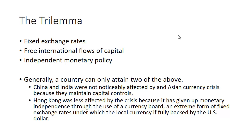For example, China and India were not greatly affected by the Asian currency crisis because they maintained capital controls — they controlled what money flowed in and out of the country. Hong Kong, on the other hand, has free international capital flows but maintains fixed exchange rates through a currency board, an extreme form of fixed exchange rate where the local currency is fully backed by the US dollar. To do this, Hong Kong gave up its independent monetary policy. This illustrates the core issues with fixed versus flexible exchange rates — there are advantages and disadvantages on both sides.